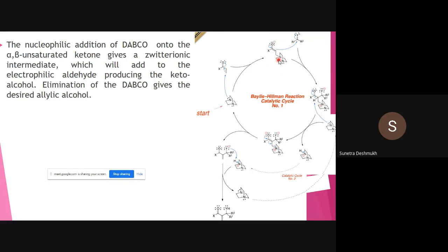The zwitterionic intermediate we have generated will add to the electrophilic aldehyde. Once we generate the zwitterion, we now perform nucleophilic addition of the generated enolate. We generated the enolate with the help of DABCO. The zwitterionic intermediate from DABCO is a more stabilized intermediate — you can search for this — and with DABCO it becomes even more stabilized.